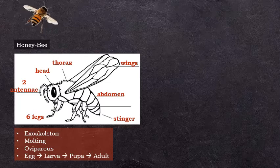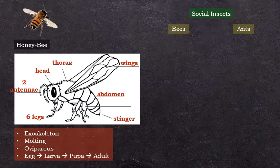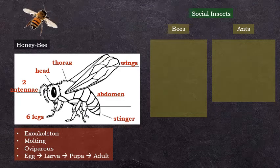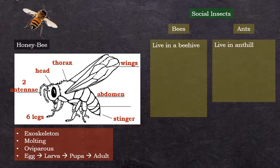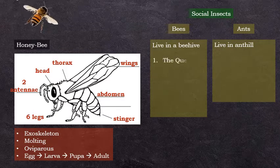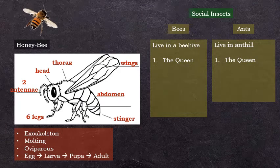Bees are considered as social insects since they live in communities. Ants too. Let's compare these two examples of social insects. Bees live in beehives and ants live in anthills. In a beehive you will find one queen, and in an anthill you will also find one queen. The queen is the largest insect in the colony.